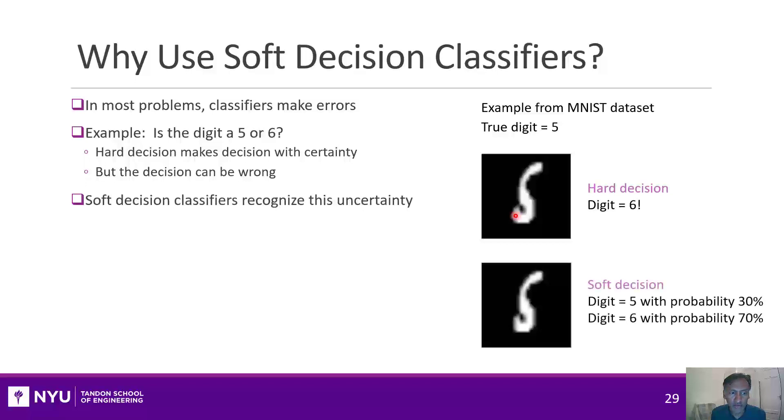In contrast, soft decision classifiers recognize that there is uncertainty. For example, in this case, faced with a tough digit like this, it might not say certainly that this digit is 6. It might say, well, I don't really know what it is, but I guess with about a 30% probability it's a digit 5 and maybe a 70% probability it's digit 6. But it recognizes that there's a chance that it makes a mistake.